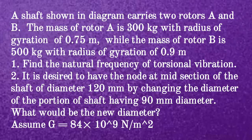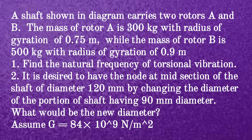Given question: a shaft shown in the diagram carries two rotors A and B. The mass of rotor A is 300 kg with radius of gyration 0.75 m, while the mass of rotor B is 500 kg with radius of gyration 0.9 m. Find the natural frequency of torsional vibration. It is desired to have the node at the midsection of the shaft of diameter 120 mm by changing the diameter of the portion of shaft having 90 mm diameter. What would be the new diameter? Assume G = 84 × 10⁹ N/m².